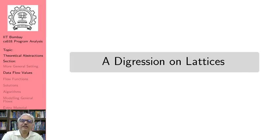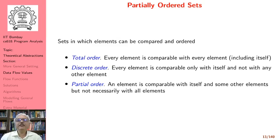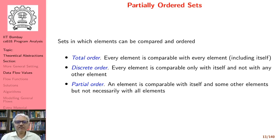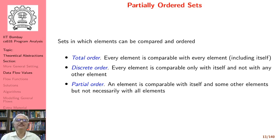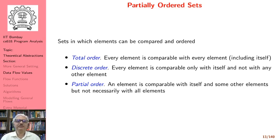Here is a small digression on lattices. We begin by discussing partially ordered sets. In general, when we talk about sets, we do not distinguish between the ordering of elements — a set containing {a, b} is the same as a set containing {b, a}. However, here we are not talking about positioning elements at different places. We are talking about ordering in terms of comparing elements with each other. So there are three kinds of orders that we talk about.